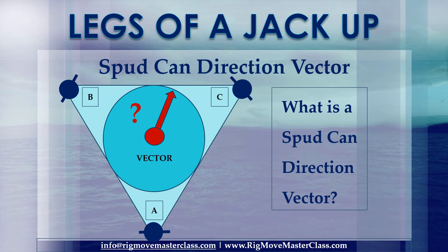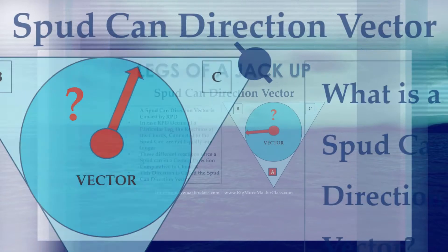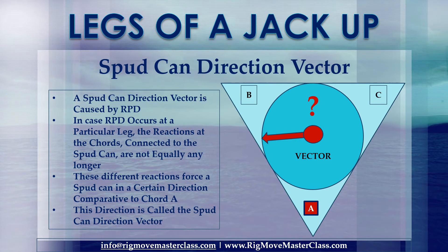Let's start with lesson number 3 of 4: Spud can direction vectors. What is a spud can direction vector? A spud can direction vector is caused by RPD. In case RPD occurs at a particular leg, the reactions at the chords connected to the spud can are not equal any longer. These different reactions force the spud can in a certain direction comparative to chord A.